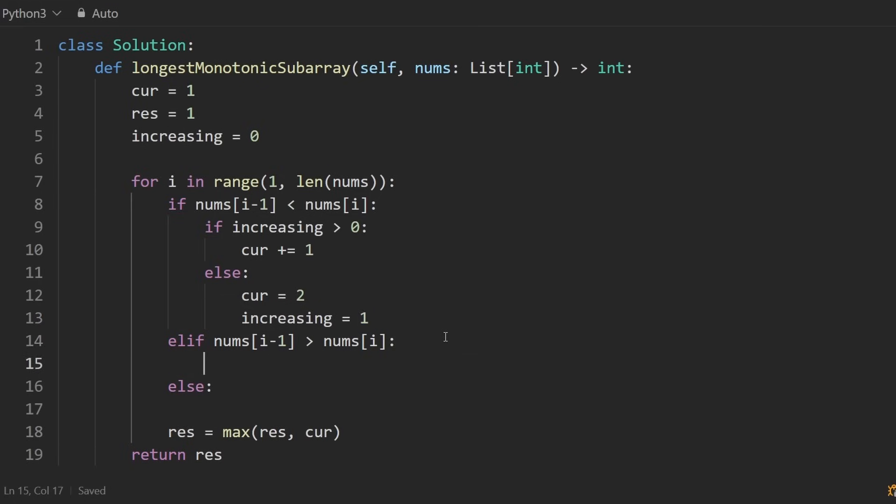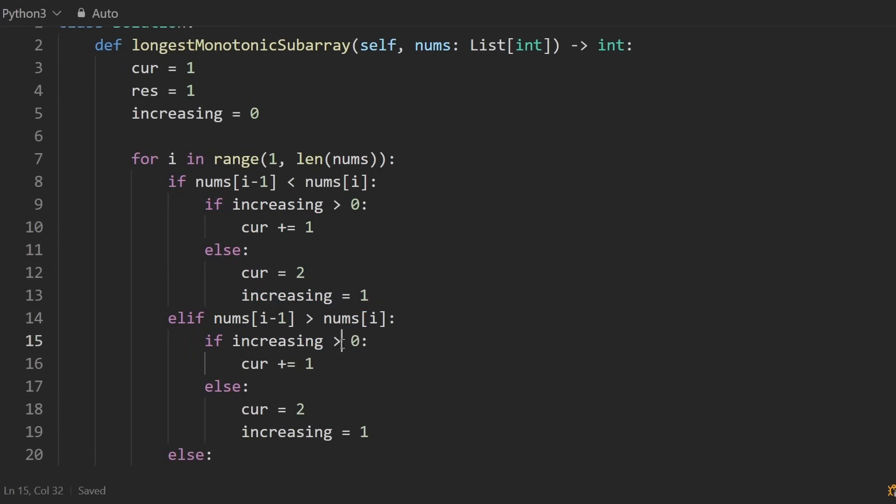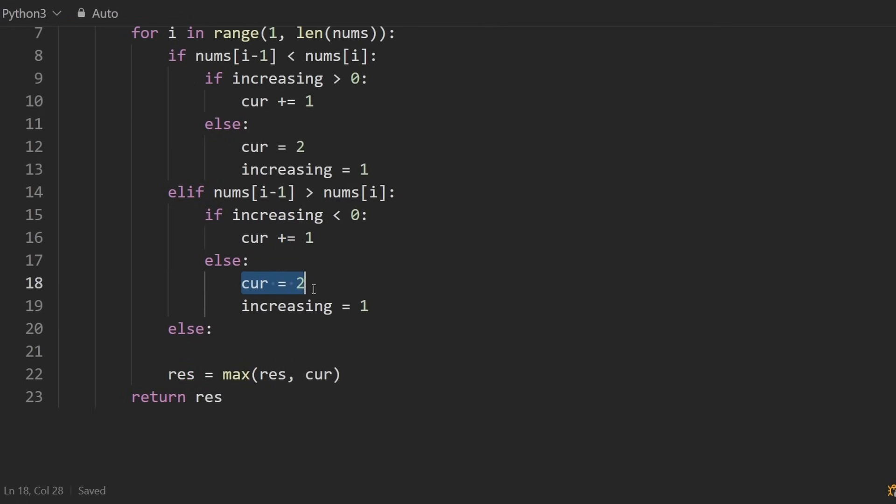And this other part here, where they're in decreasing order is going to be handled pretty much the same way. I'm just going to copy and paste this code, because I can change this now to be the other way. If this is less than zero, that means it was already decreasing. So we can just increment the length by one. Otherwise, we will set current to two, and we can set increasing to negative one to state that now the current subarray is decreasing.